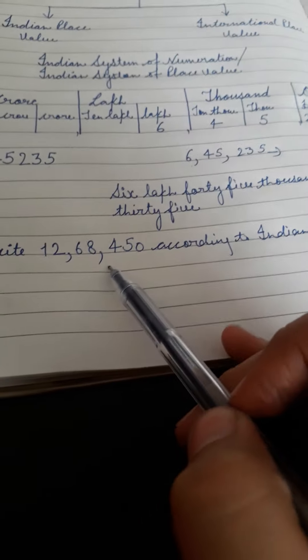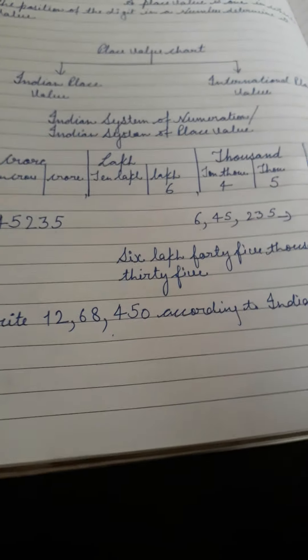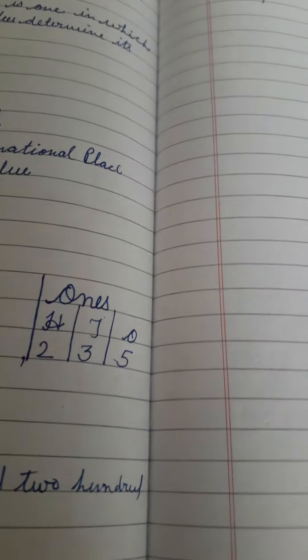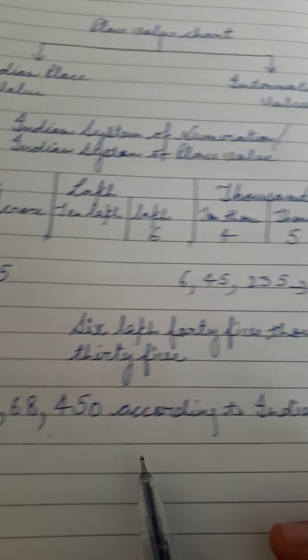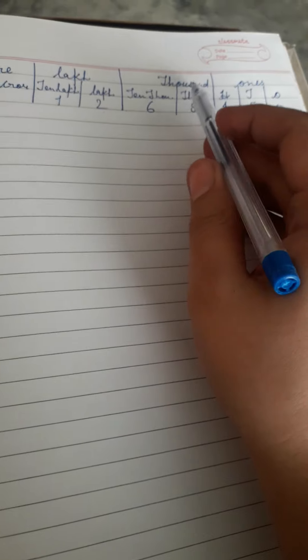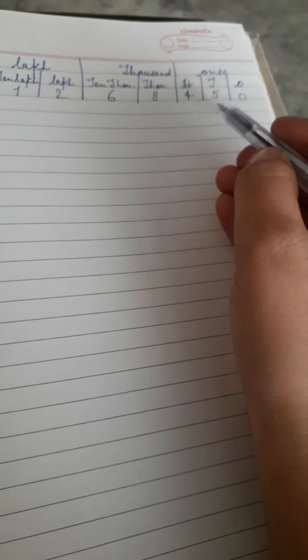Now your first sum is to write this number according to the Indian system. We will prepare the chart and write this number from the right hand side: 0, 5, 4, 8, 6, 2, and 1. Now we will read this number as 12,68,450.